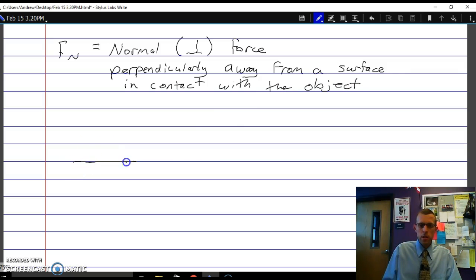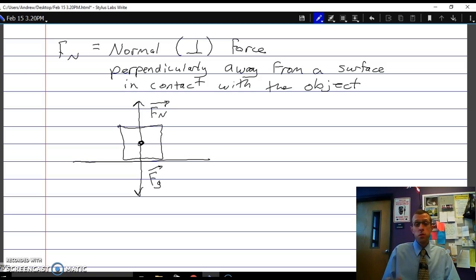So maybe we imagine a box sitting on the floor here. We'd have a couple of forces on this one. We'd have a gravitational force downward, Fg, and we'd have a normal force upward. Now, as long as the box is sitting at rest there, or is not accelerating anyway, those two forces would be equal to each other.